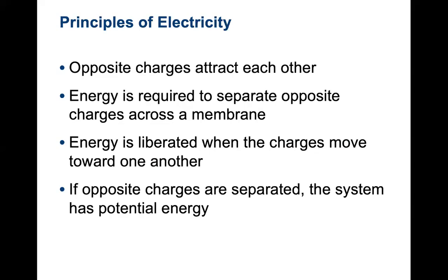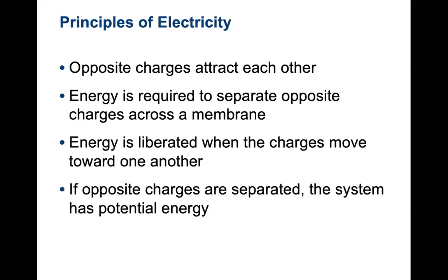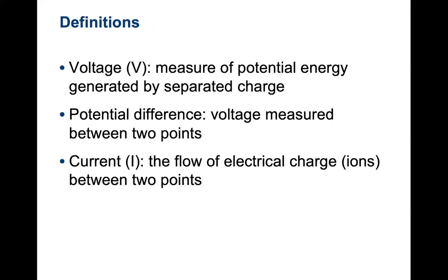Some principles of electricity: opposite charges are going to attract each other. Energy is required to separate opposite charges across the membrane, and energy will be liberated when the charges move towards one another. If you have opposite charges that are separated, this creates a potential energy. Any reversal of that system could be what we refer to as a change in the depolarization state, which is essentially the actual signal — the flow of ions. Voltage is the measure of potential energy generated by a separated charge.